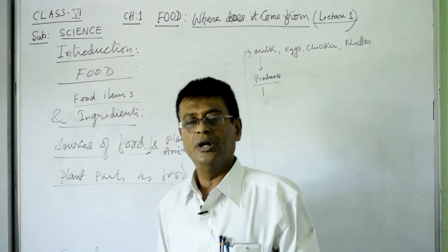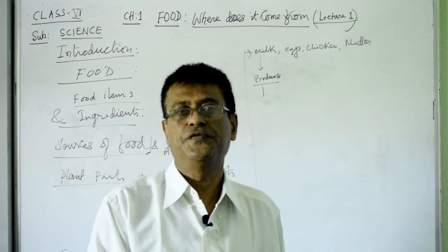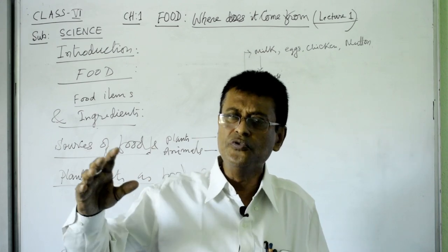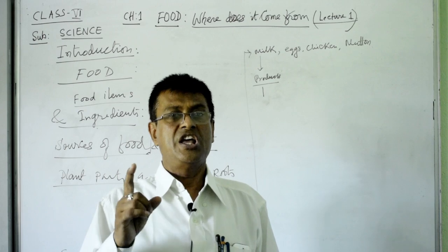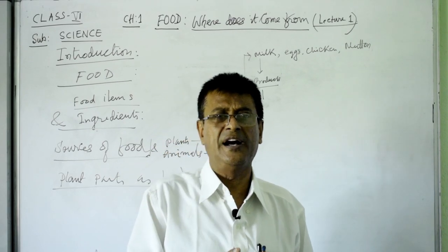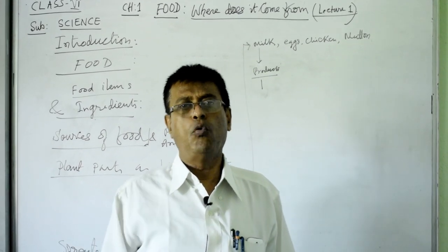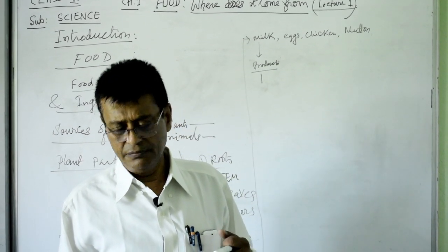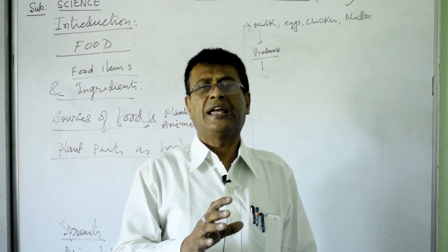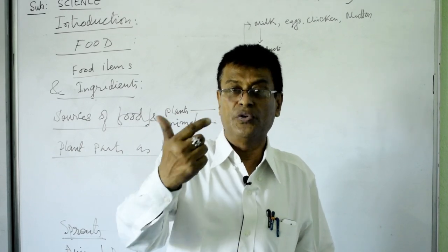Every organism living on the surface of the earth requires food, whether it is a very tiny object or the huge elephant or the blue whale. Everyone requires food because food is the first basic need for living organisms. Food is chemical energy converted from solar energy, kept in potential form.